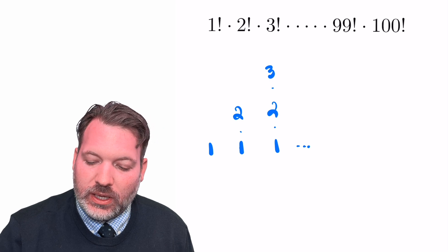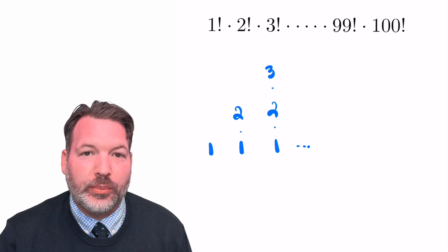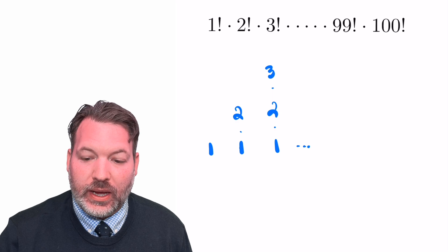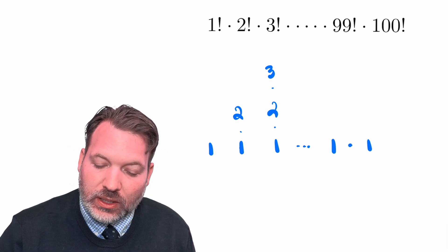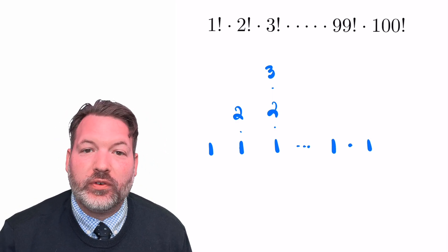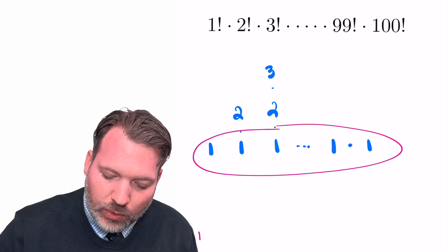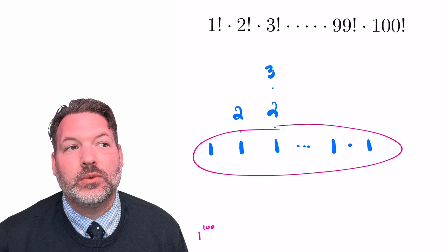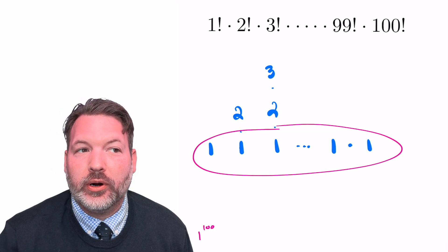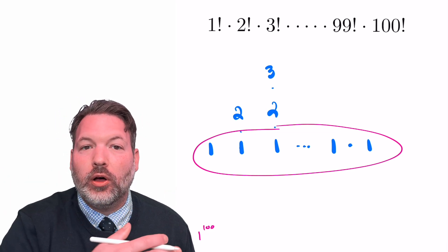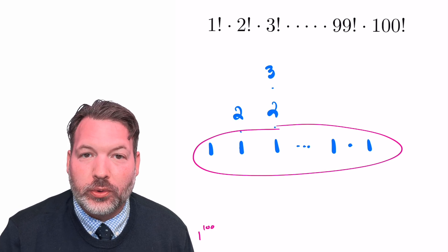One thing we should be able to tell here is as we look across, these numbers are going to be represented many, many different times. 1 will end up being represented the most because 1 is a part of every single one of these factorials. So looking at this left to right, we could say another way to write this is we're going to have a 1 to the 100th power because we would have 100 ones all being multiplied together by the time we get to our last factorial.